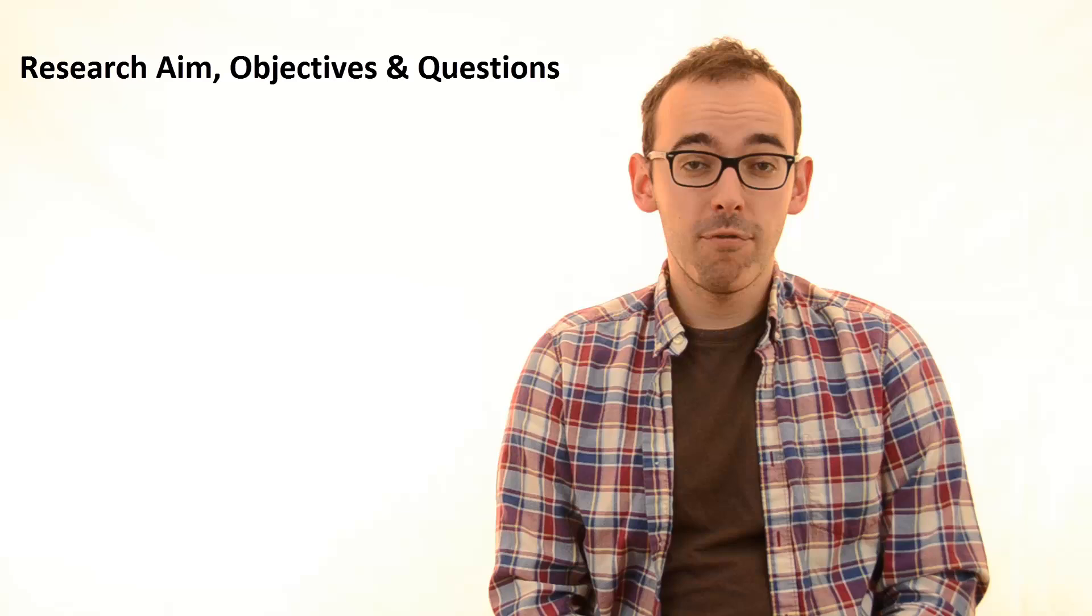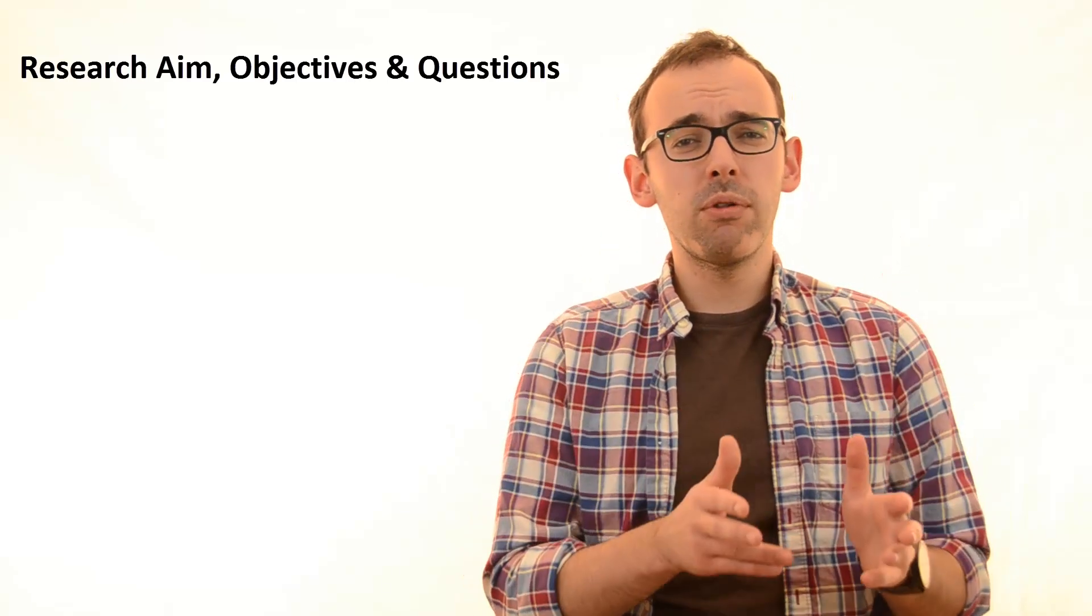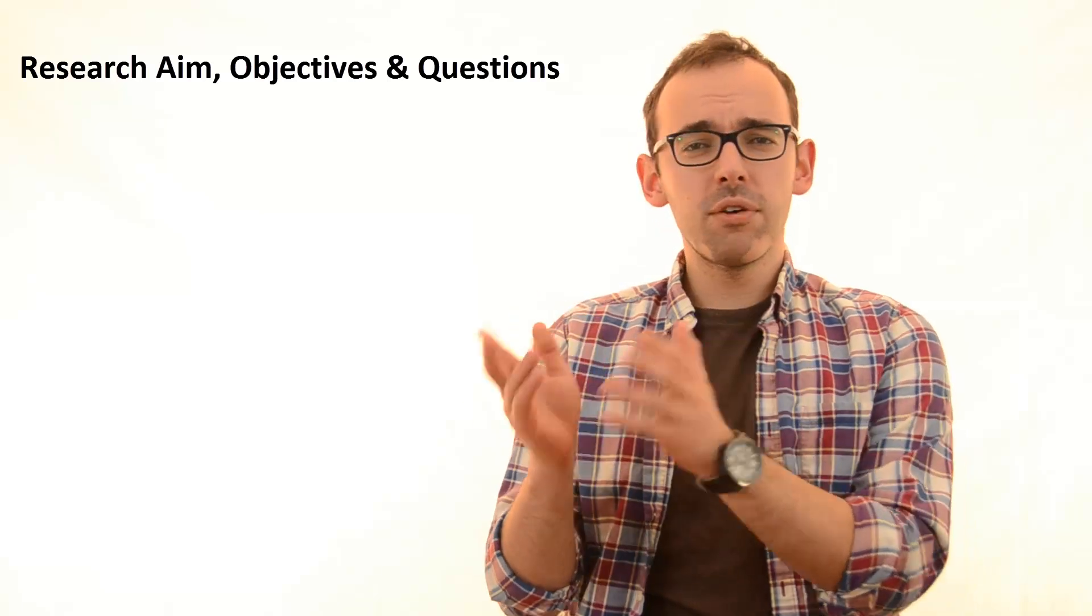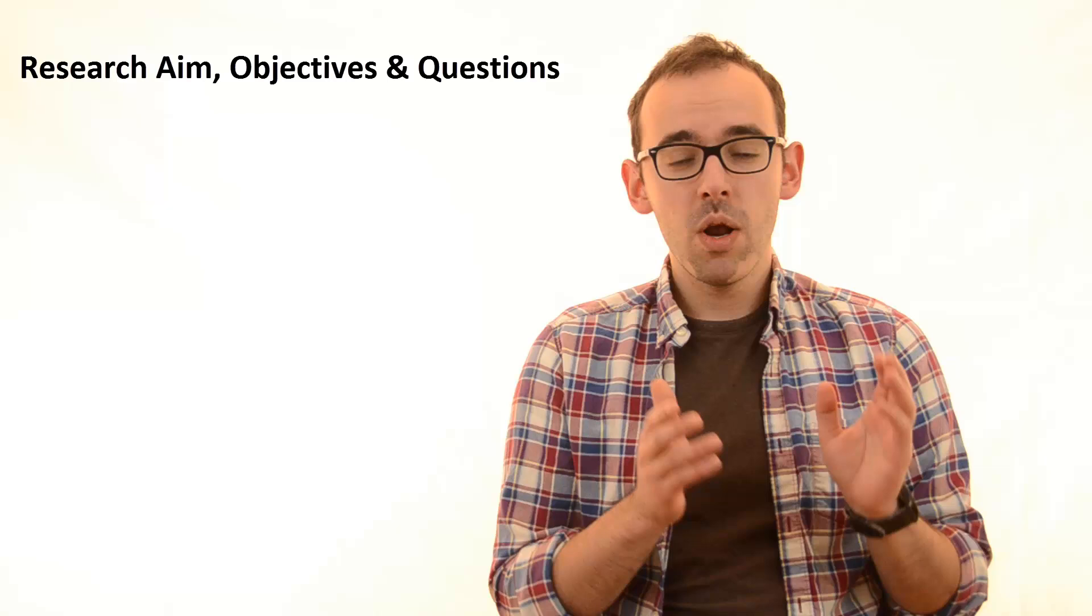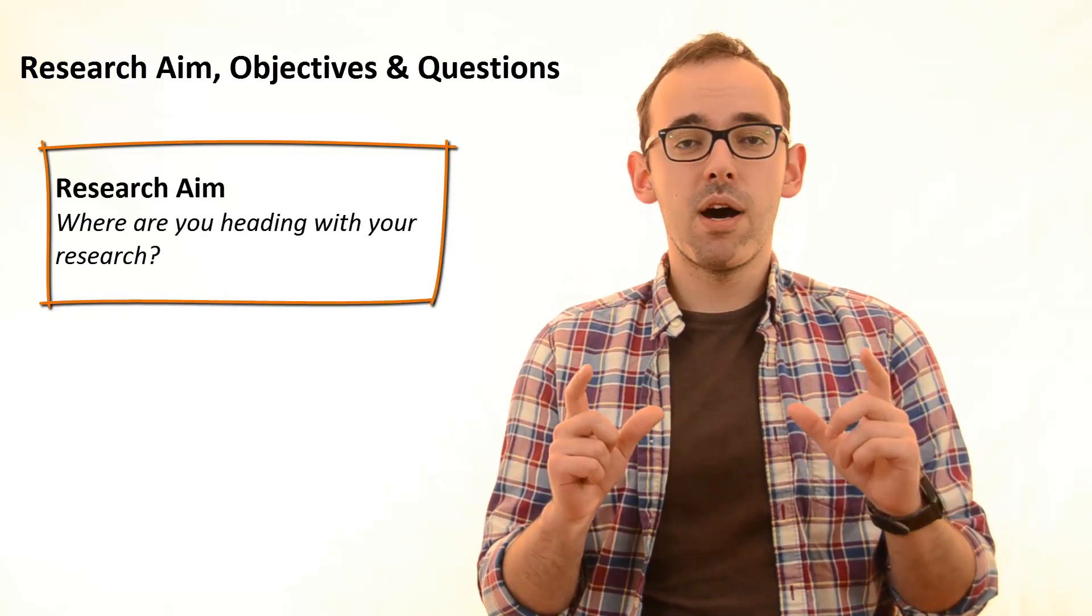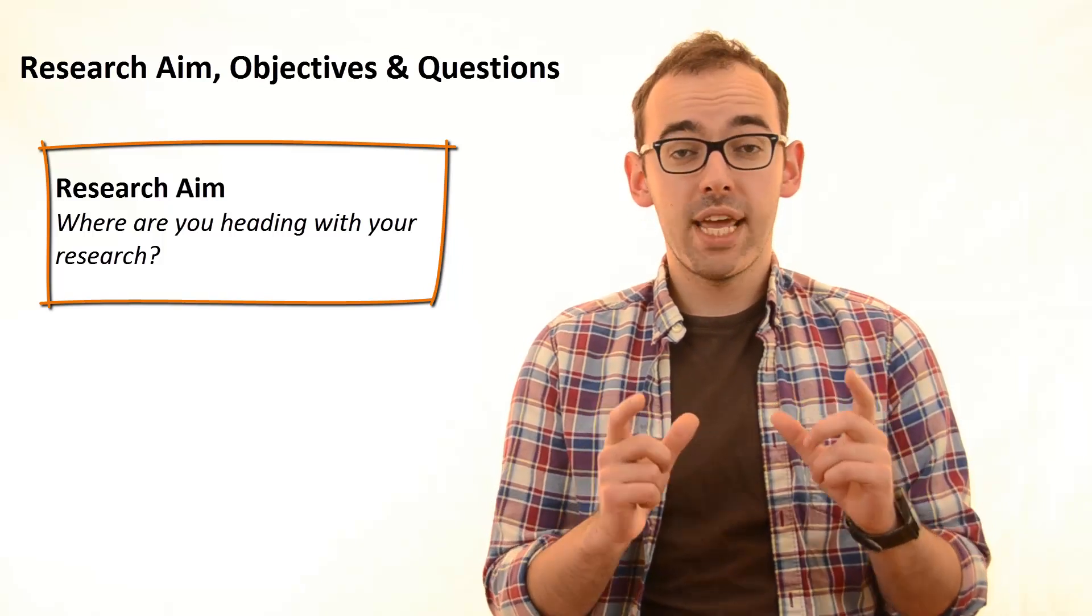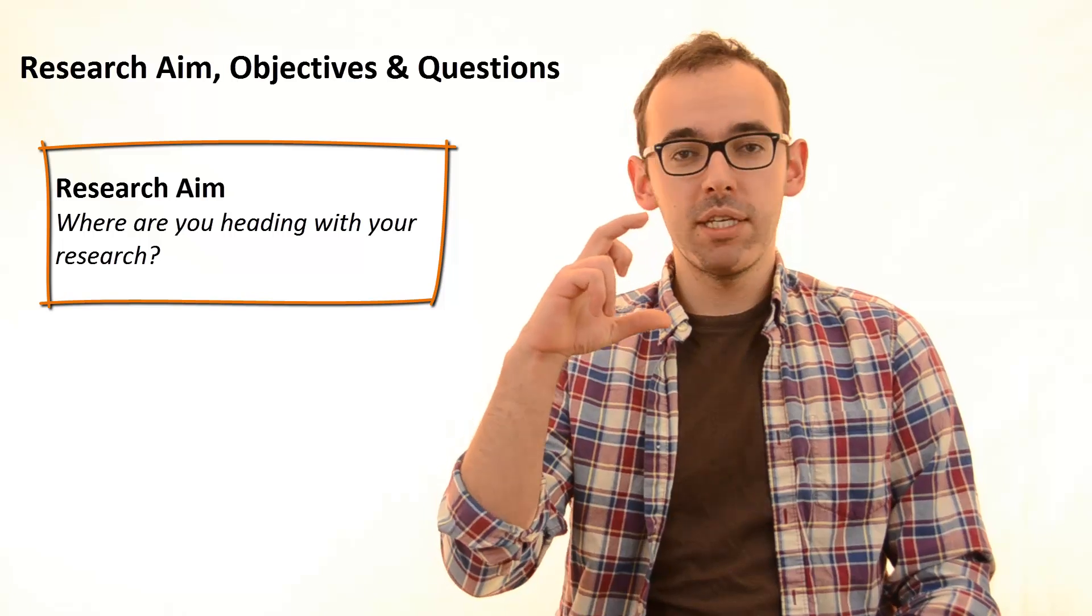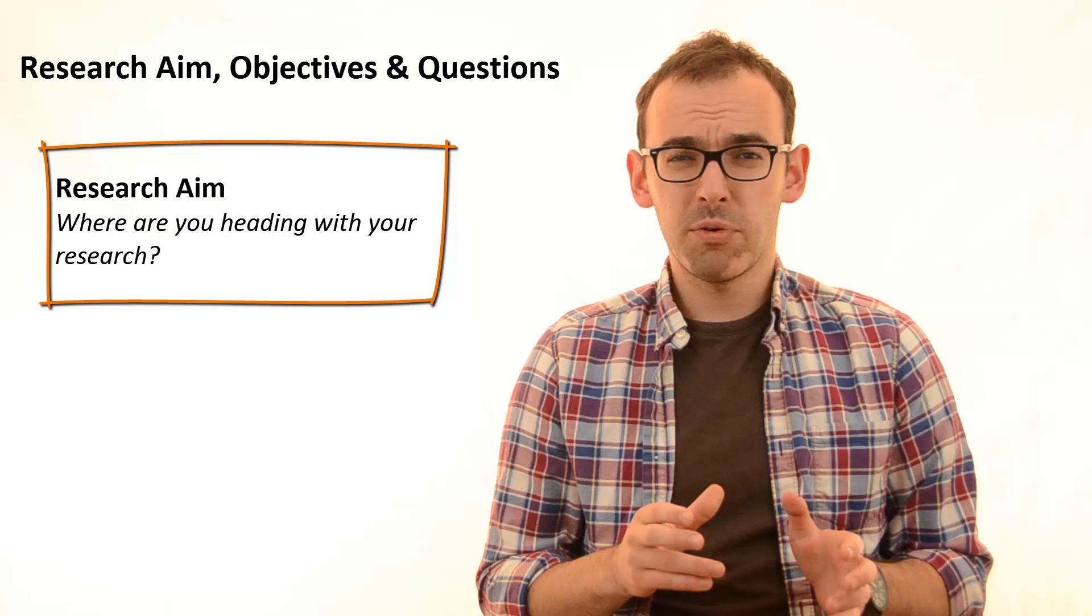First of all, formatting. There is a lot of confusion about how things should be called - what is a research aim, what is a research objective, what is a research question, and how do these work together? Let's go through it. There definitely should be a dedicated part in your paper that is usually called research aim. It's going to be maybe this long, maybe half a page long, but it's definitely going to be short.